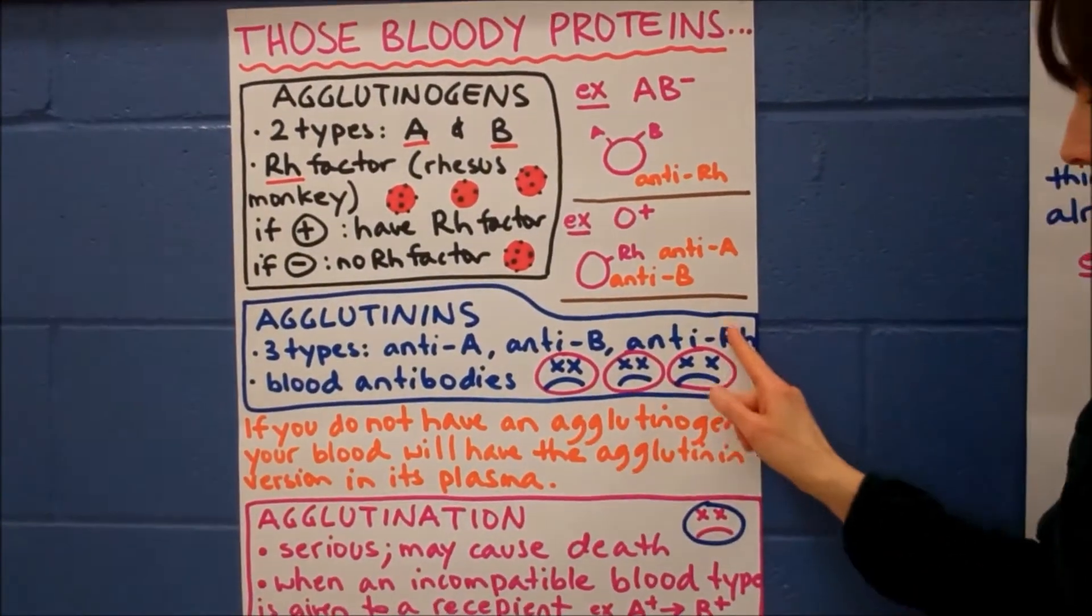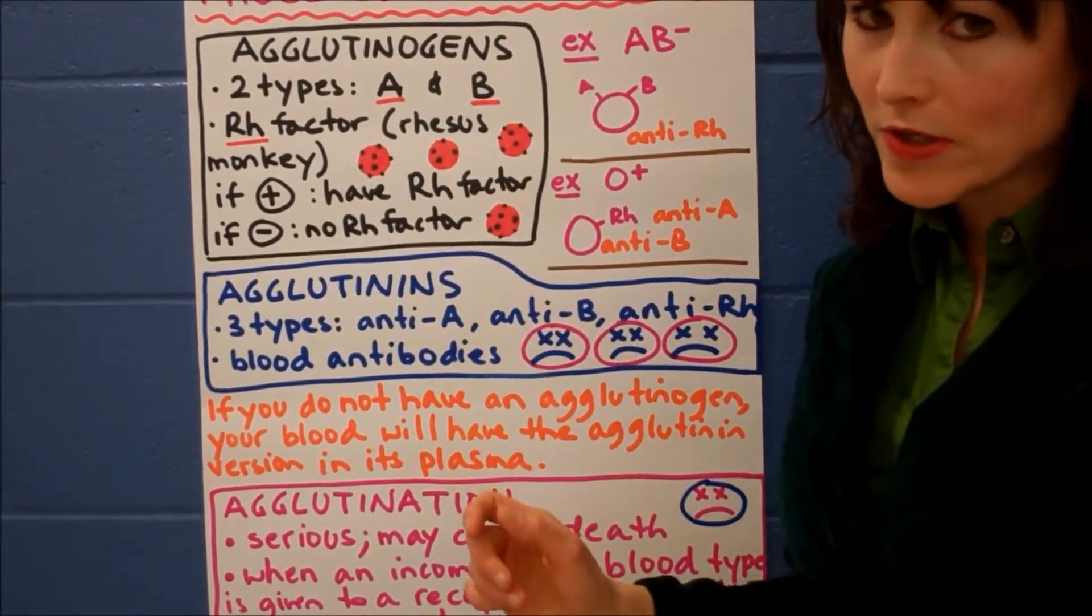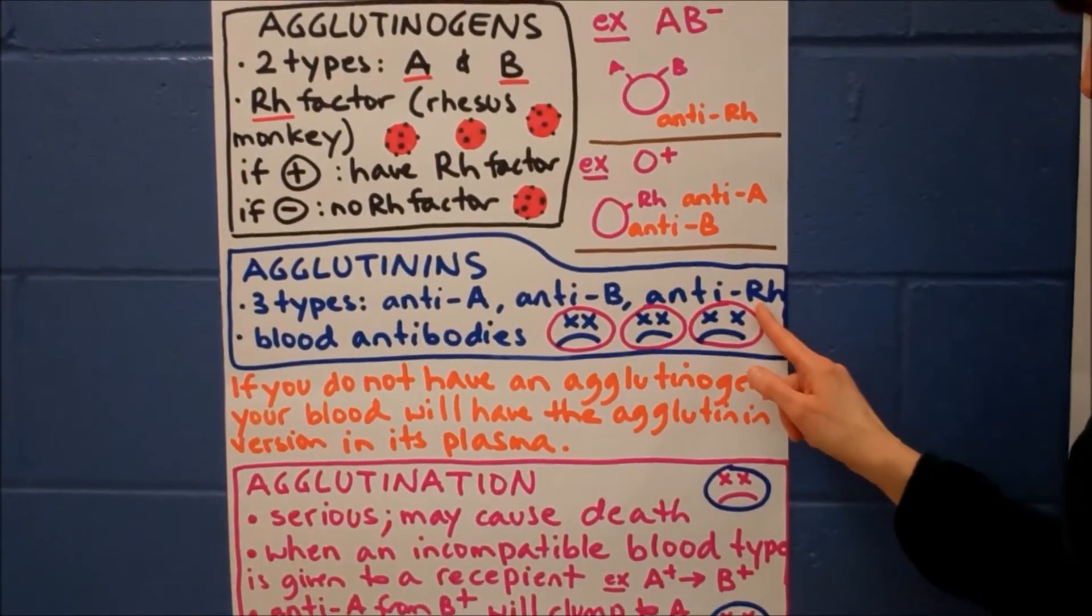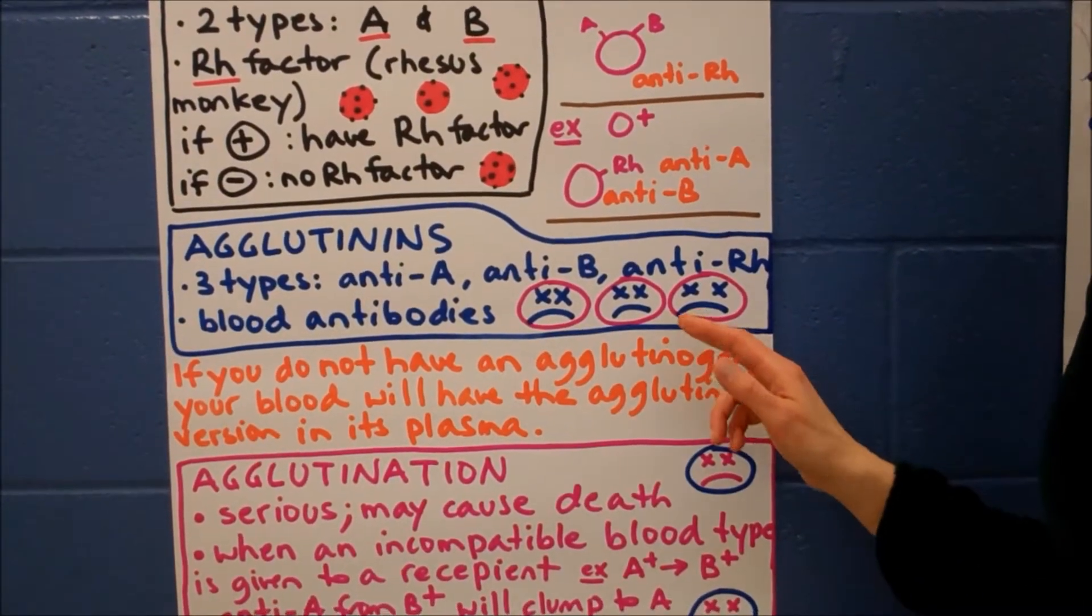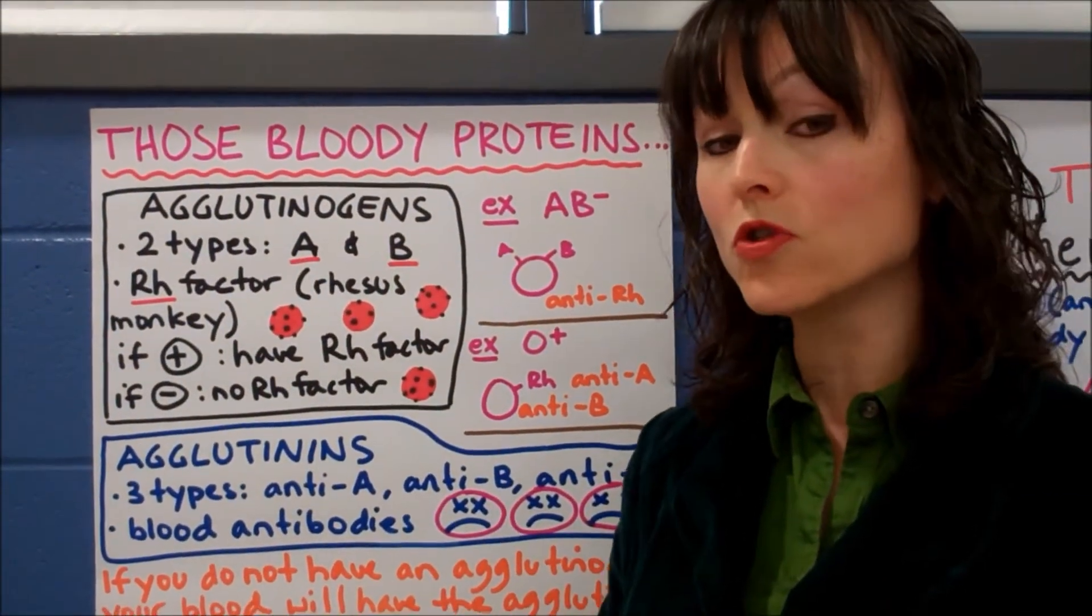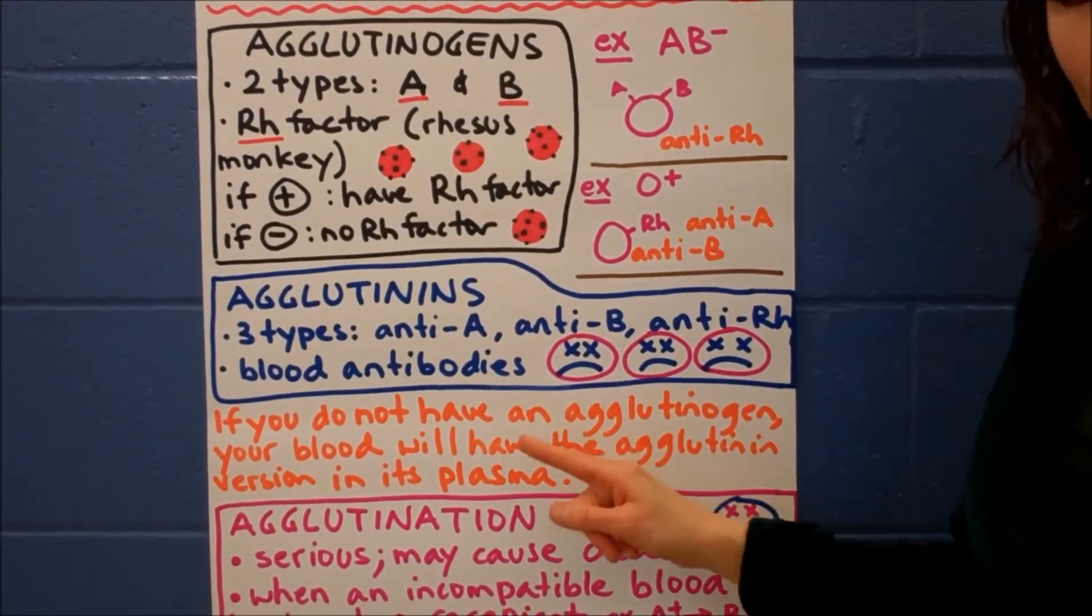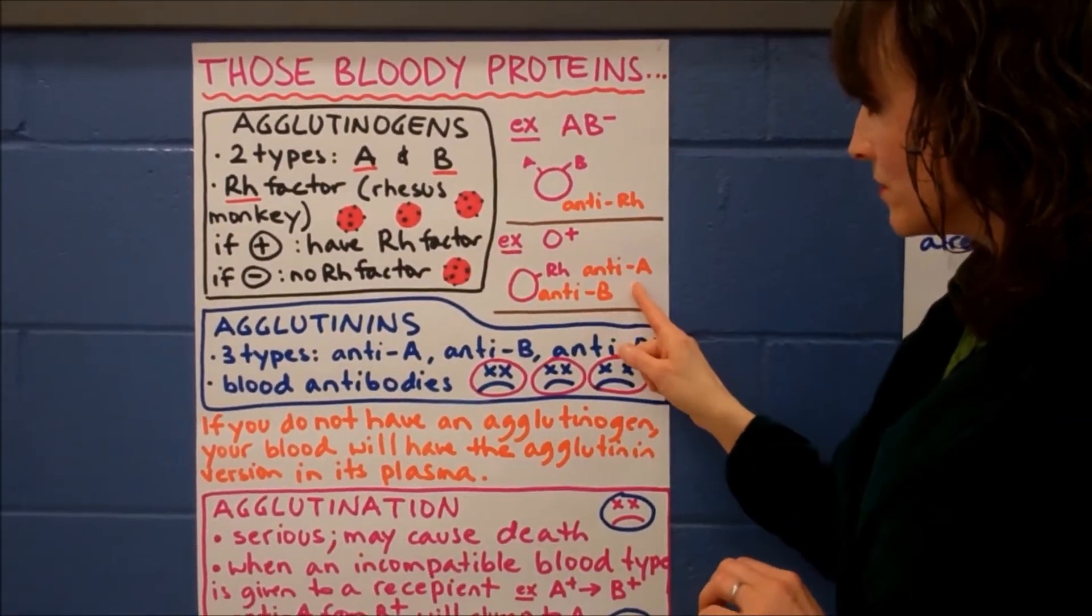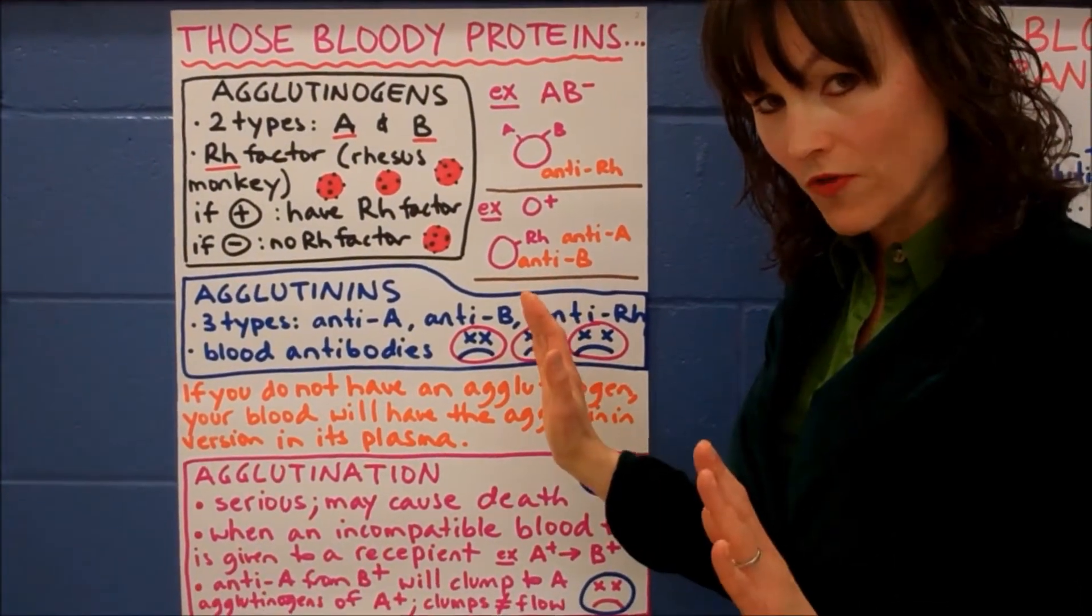Now, a little bit more about agglutinins. Remember, they're the ones that are in the liquid portion of your blood in the plasma. There are three types: anti-A, anti-B, and anti-RH. These are also called blood antibodies. And these faces are there because if you give the wrong blood type to somebody, you can actually kill them. So when you do a blood transfusion, it's very important to give the right type of blood. Now, if you do not have an agglutinogen in your blood, you always have the anti-version of it, as you've seen here. So feel free once again to pause this, and to go over this again, if this is too fast for you.